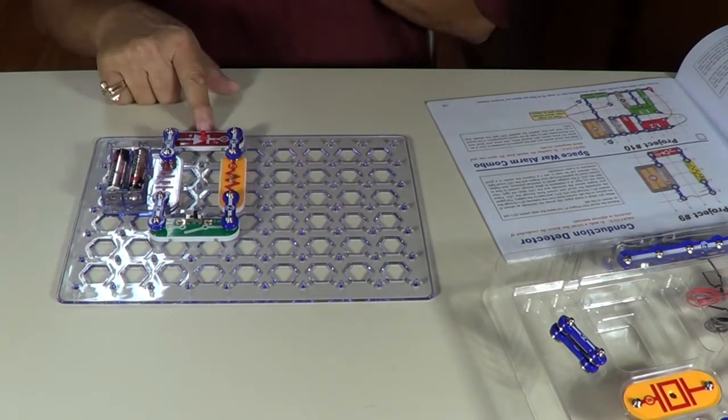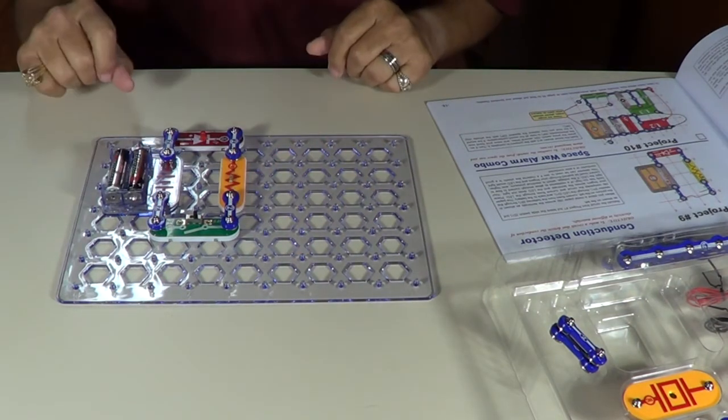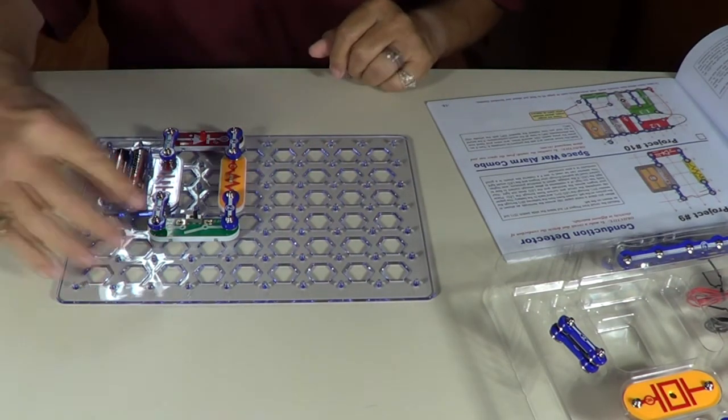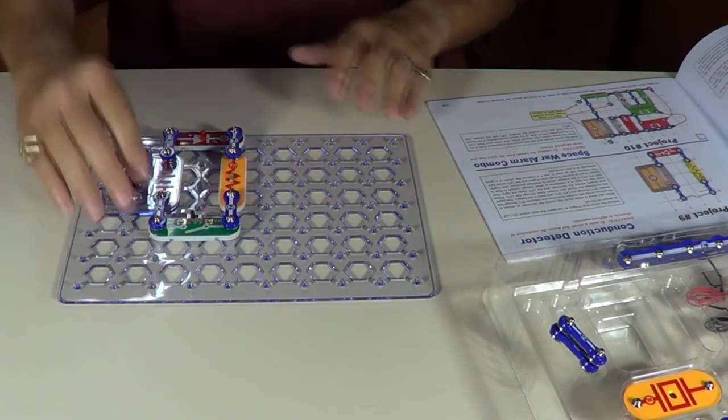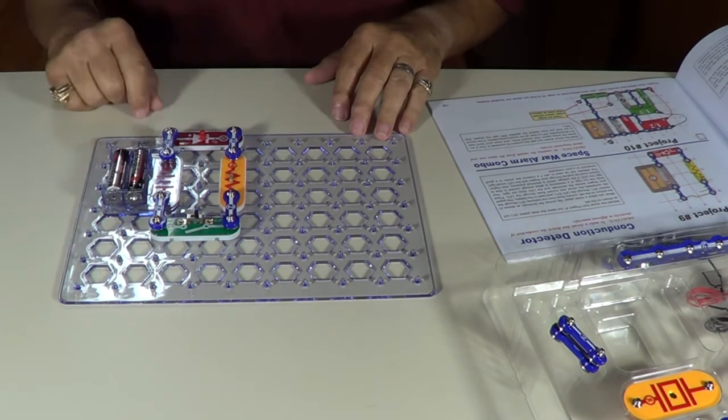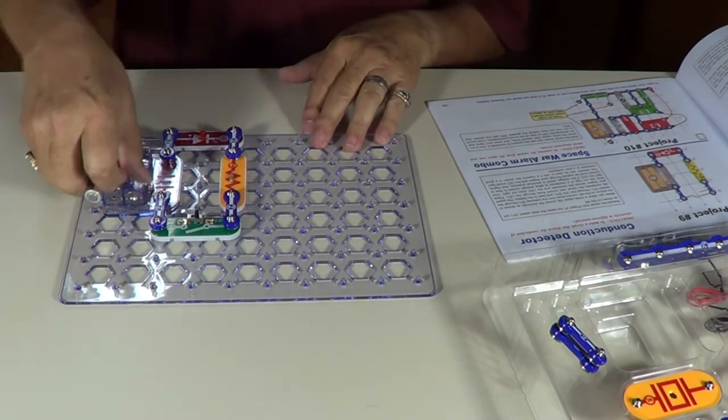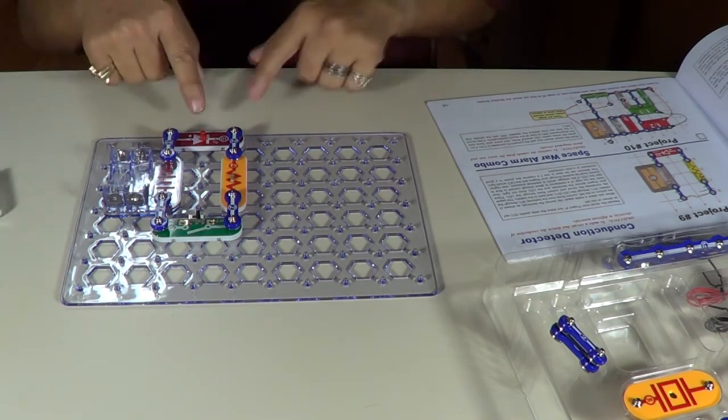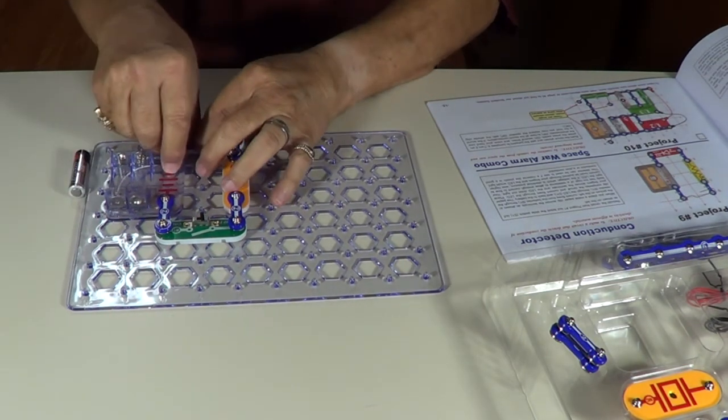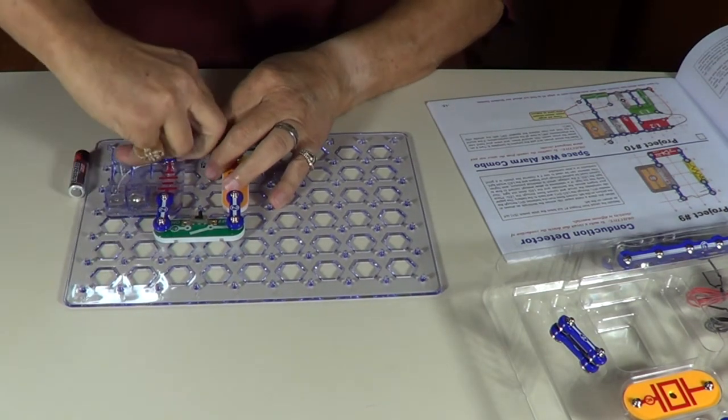Now remember this diode is directional. Right now we have it backwards so this light will not light up. Watch. See there, the light did not light up. Okay, so now what we're going to do, take our batteries out. And we are going to reverse the direction of the diode. This would be project number nine. Show you that it is conductors.